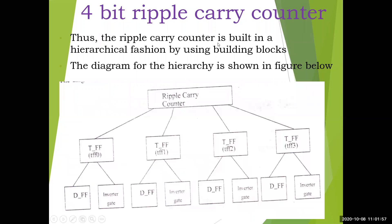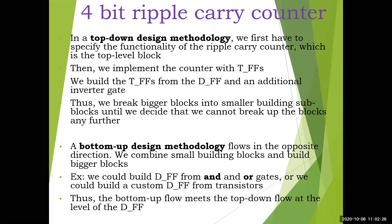The ripple carry counter is built in a hierarchical fashion using building blocks. Instead of writing a program directly for it, we followed top-down design methodology — breaking the counter into four T flip-flops (T flip-flop 0 to T flip-flop 3), and then building each T flip-flop from a single D flip-flop and an inverter (NOT gate). To summarize: first we specify the ripple carry counter, then implement it with T flip-flops, then build the T flip-flops from D flip-flops and inverters — the leaf cells.